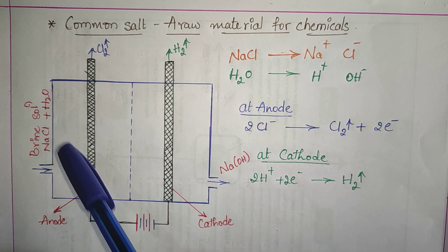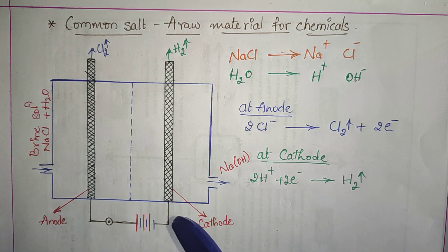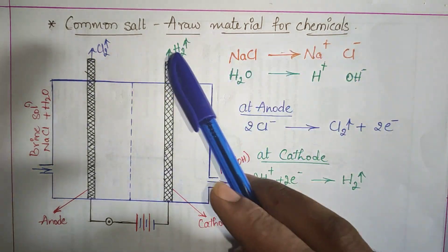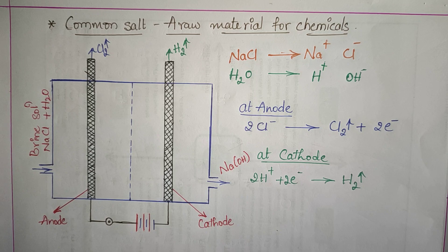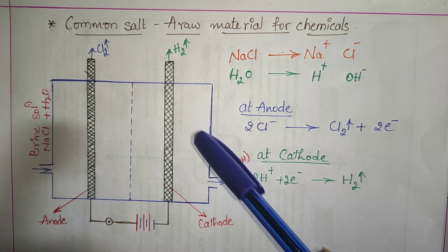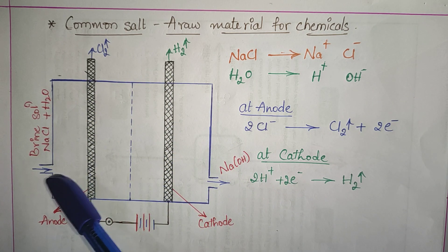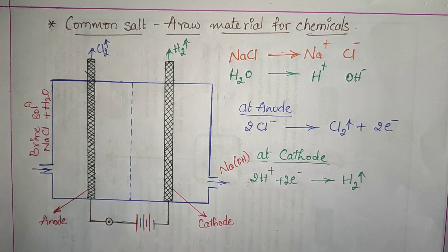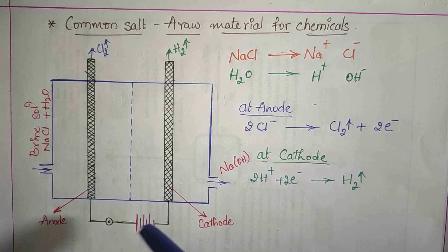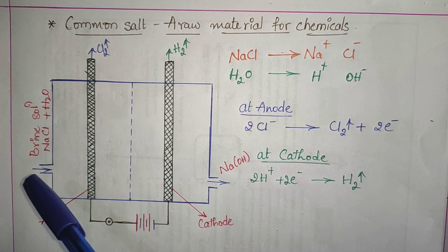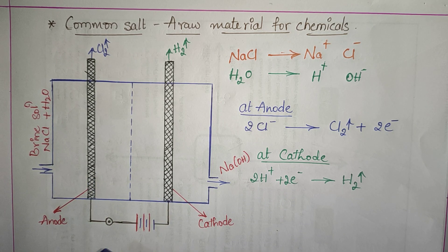Common salt, NaCl, acts as a raw material for many chemicals. In the experimental setup we have a closed beaker with one inlet and one outlet, having two electrodes — an anode and a cathode — connected to a battery with a switch. Through the inlet, brine solution is passed in.